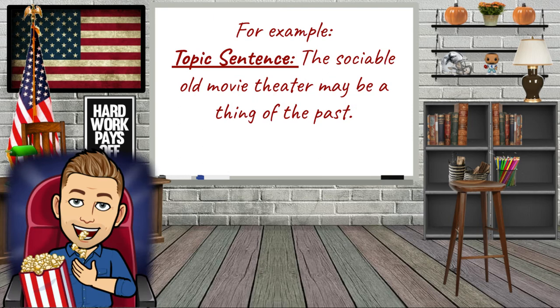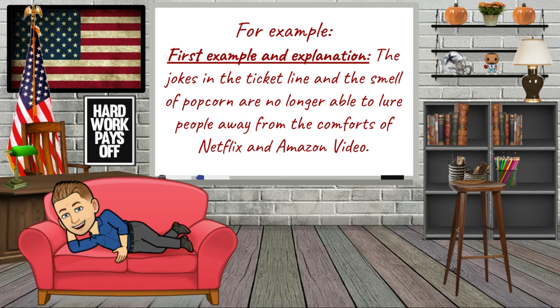For example, maybe your topic sentence is: 'The sociable old movie theater may be a thing of the past.' Then in your example and explanation you get more specific. Remember, we talked about examples and explanations earlier — now we're talking about how to write good examples and explanations by using specific language. So: 'The jokes in the ticket line and the smell of popcorn are no longer able to lure people away from the comforts of Netflix and Amazon video.' We didn't just talk about how movie theaters aren't getting as many people anymore — we're talking about how. We're getting specific, giving details and examples and explanations.